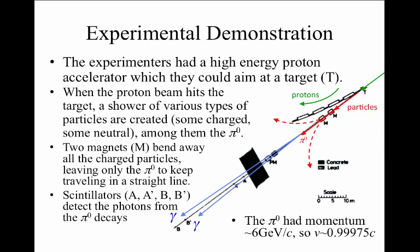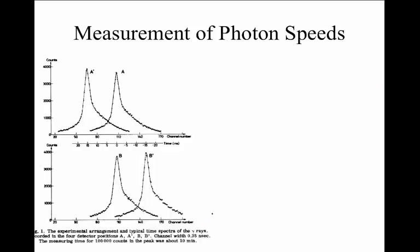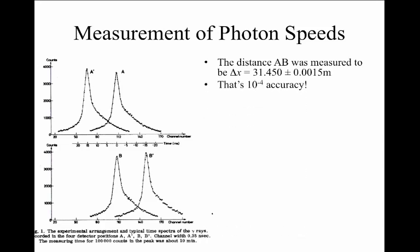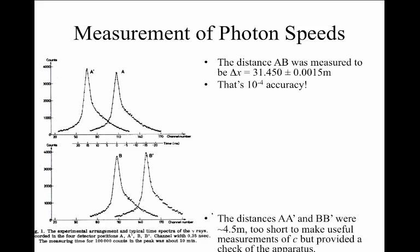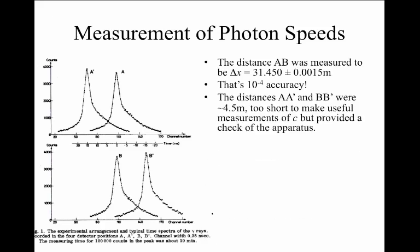In this experiment, the neutral pions had a momentum on the order of six gigaelectron volts, and so the velocity of each pion was something very close to the speed of light. At each of the stations, the four stations A, A', B and B', the experimenters would record the time of arrival of a photon at one of those stations. The distance between locations A and B was measured very precisely to be 31.45 meters, with an error of about 1.5 millimeters. That's a percentage error of about one in 10 to the 4, or 0.01%.